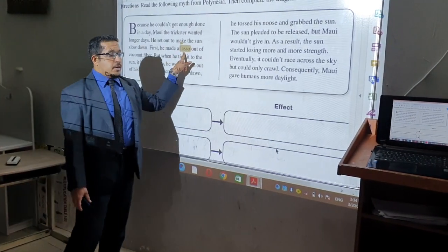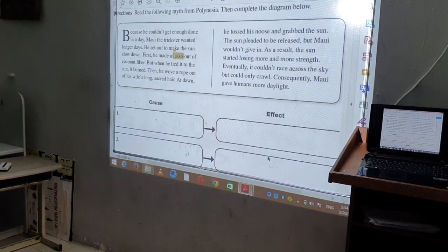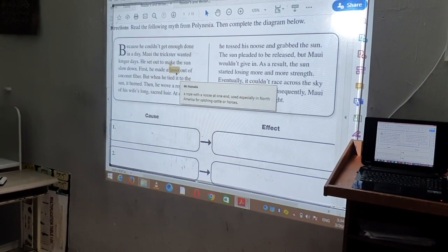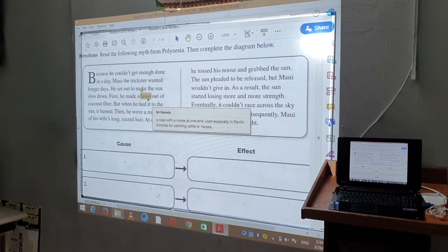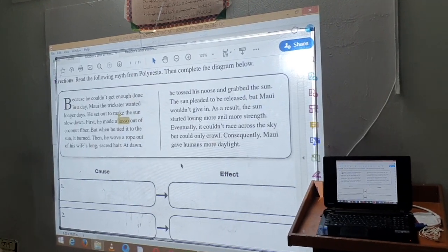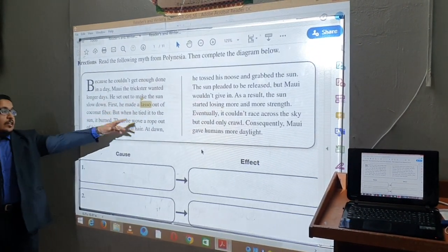First, he made a lasso. What do I mean by the word lasso? As we can see together, a lasso is a rope with a loop at one end, used specially in North America for catching cattle or horses.